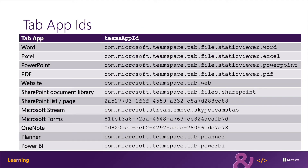Let's take a look at some of the different app IDs for our tabs. You can see some of them have a consistent naming structure, like the ones for Word, Excel, and PowerPoint. However, PDF is similar to those three, as is website, but you'll see where things start to change when we get to SharePoint. A SharePoint document library follows a similar naming convention, but a SharePoint list or page is looking for a specific GUID, and it's going to need additional details to know which list or page to display. Same thing goes for Microsoft Stream, Microsoft Forms, OneNote, Planner, and Power BI.